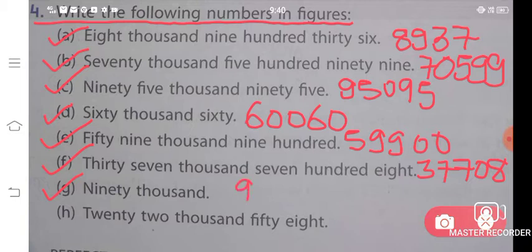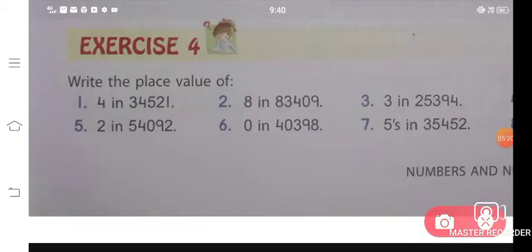G part is ninety thousand — 9 followed by 4 zeros: 90,000. H part is twenty-two thousand two hundred fifty-eight: 22,258. Now our Exercise 3 is over.